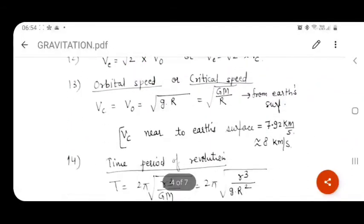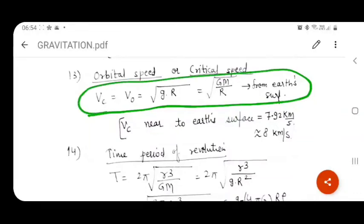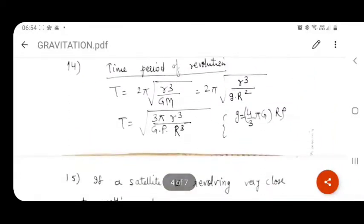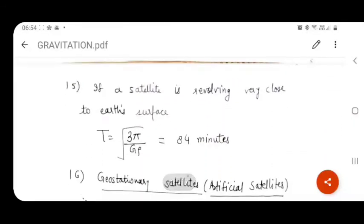Next term is orbital or critical speed. This is the speed with which a satellite revolves in a circular orbit around the Earth's or any planet's surface. Its typical value is about 8 km per second near the Earth's surface. Next is time period of revolution of the satellite. As by Kepler's third law, we have proved that T square is directly proportional to R cube. These are various formula of time period. Next, if a satellite revolves very close to Earth's surface, then it has a typical time period of 84 minutes.